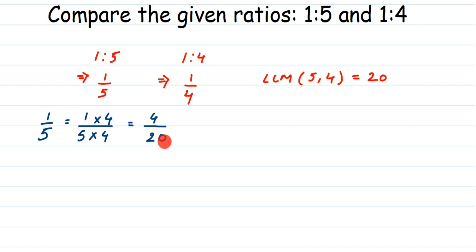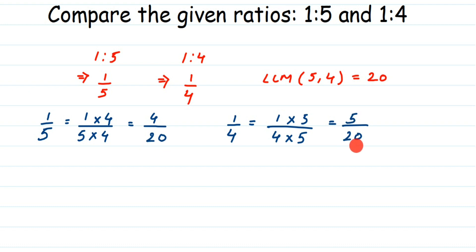Similarly for 1/4: what do we multiply 4 by to get 20? The answer is 5. So we multiply both numerator and denominator by 5: 1 × 5 = 5, giving us 5/20. Now both fractions have the same denominator — 20. We have 4/20 and 5/20. Notice we got the same values 4 and 5 as in the cross multiplication method.